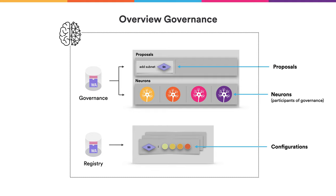These proposals can then be voted on. Second, it stores so-called neurons, which determine who is allowed to participate in governance. The second canister that is important is the registry canister, which basically stores the configuration of the whole internet computer that can then be looked up by others. So it stores, for example, the information that subnet S3 consists of these four nodes.